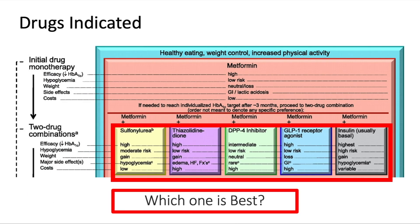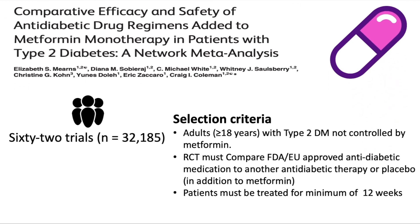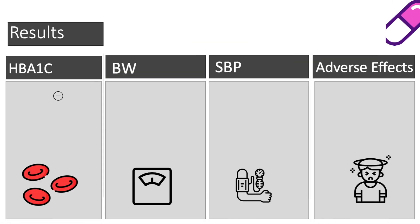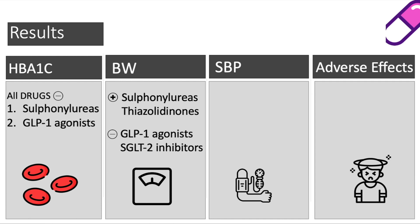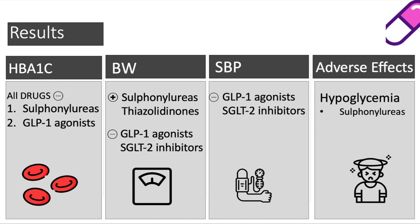A network meta-analysis by Elizabeth and colleagues aimed to assess the efficacy and safety of different oral anti-glycaemic agents in adults with inadequately controlled type 2 diabetes mellitus on metformin alone. It included 62 randomised control trials comparing anti-diabetic medications to either other therapies or placebo, with patients treated for a minimum of 12 weeks. The meta-analysis showed that all therapies significantly reduced HbA1c; however, sulfonylureas reduced HbA1c the most, followed by GLP-1 agonists. Body weight was significantly increased by sulfonylureas and thiazolidinediones, whereas GLP-1 agonists and SGLT-2 inhibitors significantly reduced both body weight and systolic blood pressure. The major adverse effect recorded was hypoglycaemia in the sulfonylurea group.